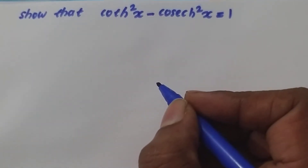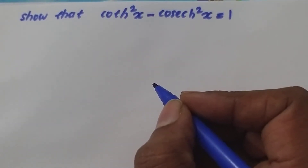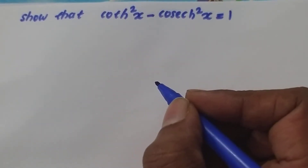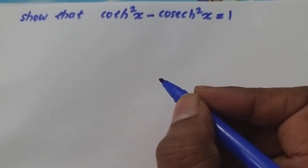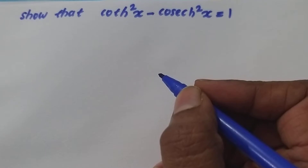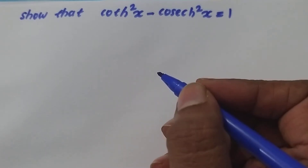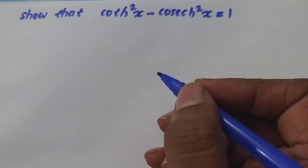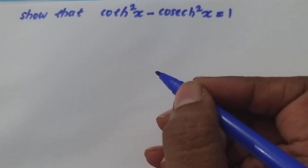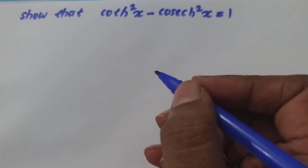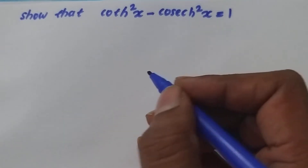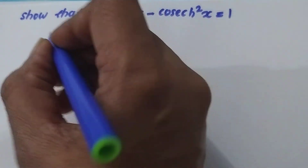Hi students, show that coth²x minus cosech²x is equal to 1. This is a hyperbolic functions identity that we will be able to prove. First, let's look at the LHS part.